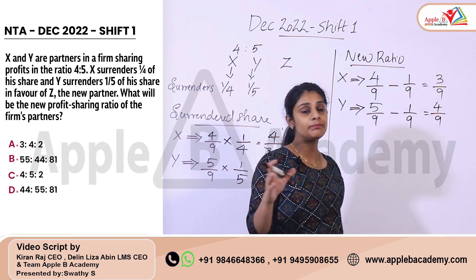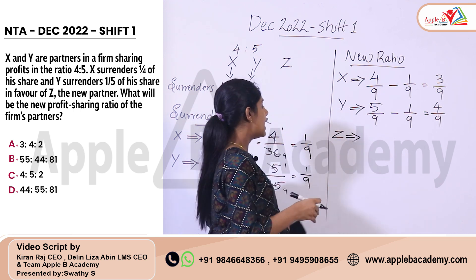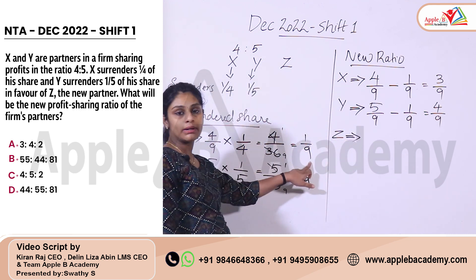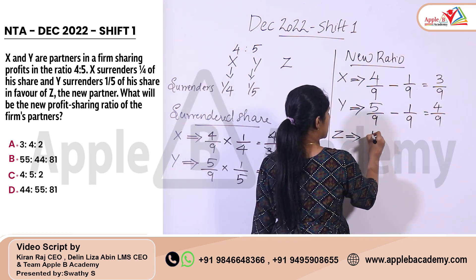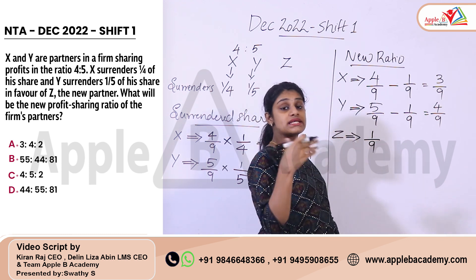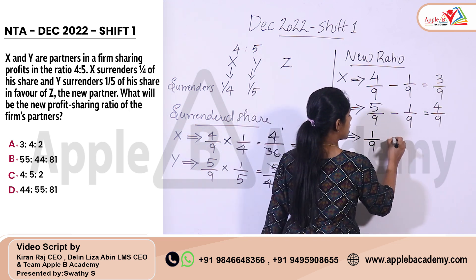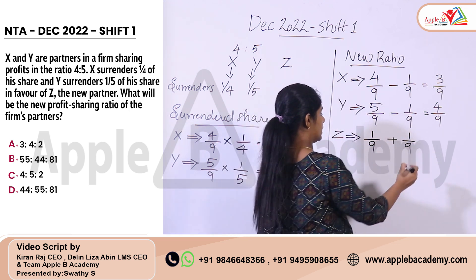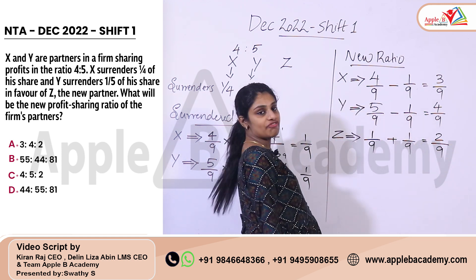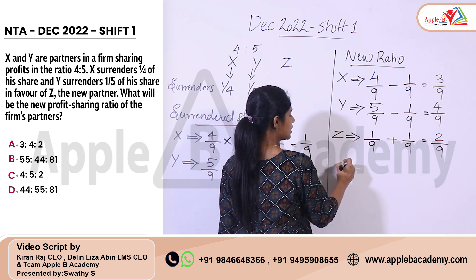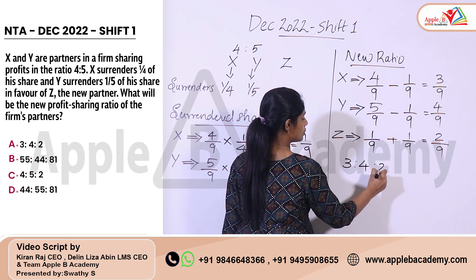Z's share is the total amount surrendered: X's sacrifice 1/9 plus Y's sacrifice 1/9, which equals 2/9. So the new profit sharing ratio is X : Y : Z = 3/9 : 4/9 : 2/9, which gives us 3 : 4 : 2.